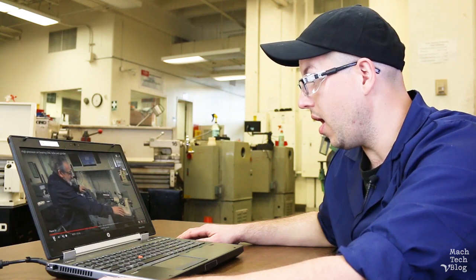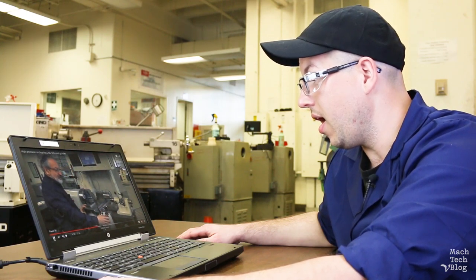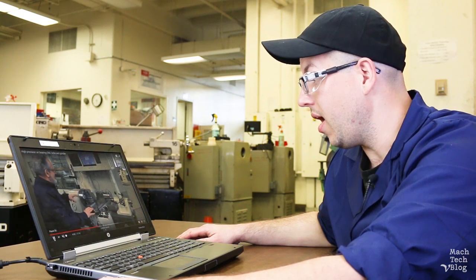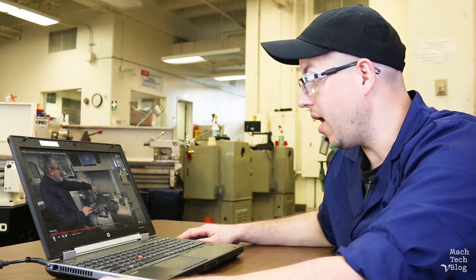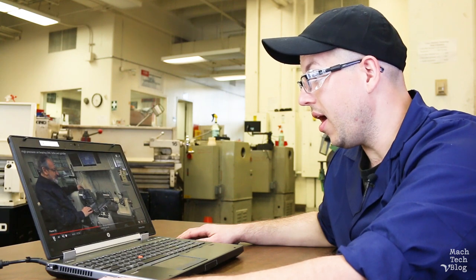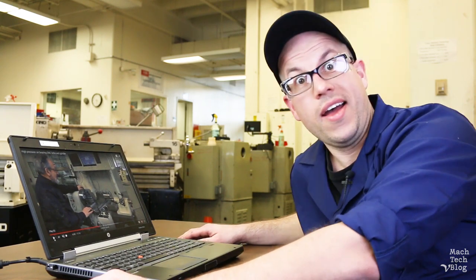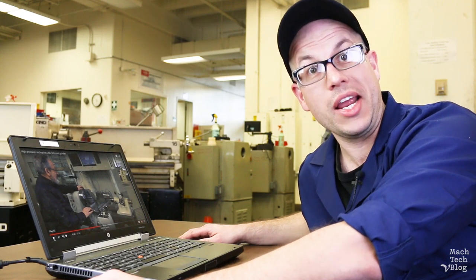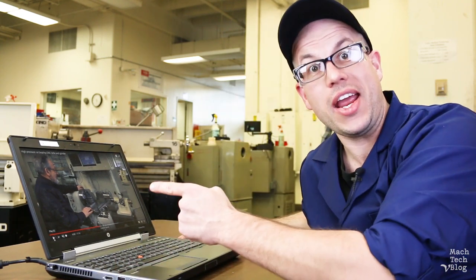So this floats on air bearings, this whole saddle floats on air bearings, the cross-slide floats on air bearings, the main spindle and the grinding spindle are all on air bearings. Hi, I'm Adam. This is the Machine Tech video blog, and today I'd like to talk about air bearings.